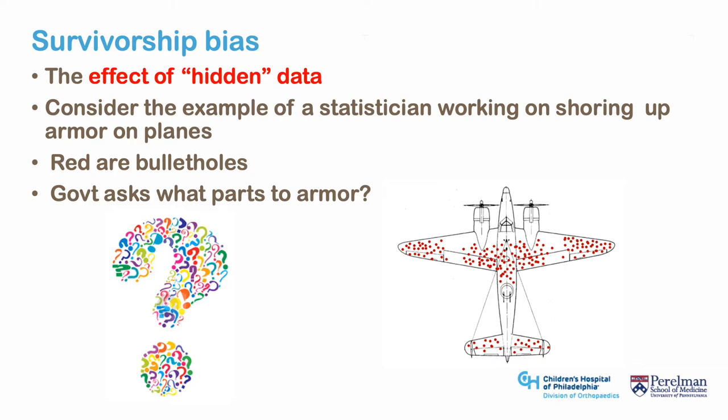Survivorship bias can occur because of missing data points. In surgical research, this may occur through competing risks — the effect of hidden data present in patients who didn't follow up or didn't survive until the final analysis. The classic example is Abraham Wald, a mathematician in World War II asked to analyze bullet holes on returning planes to determine where armor should be placed. You couldn't armor the whole plane because it would be too heavy. Bullet holes on the returning planes were found on the body, the wings, and the tail.